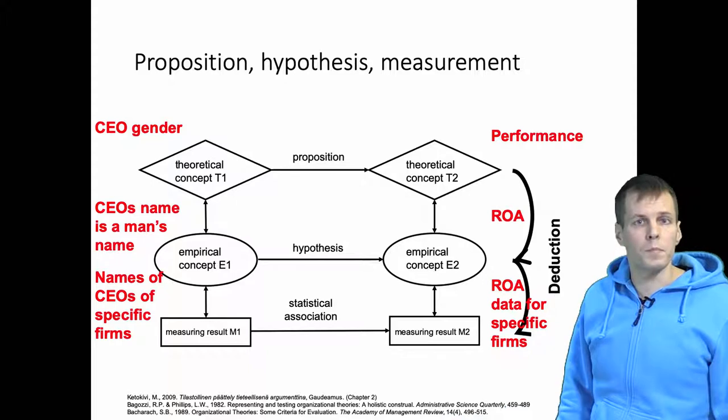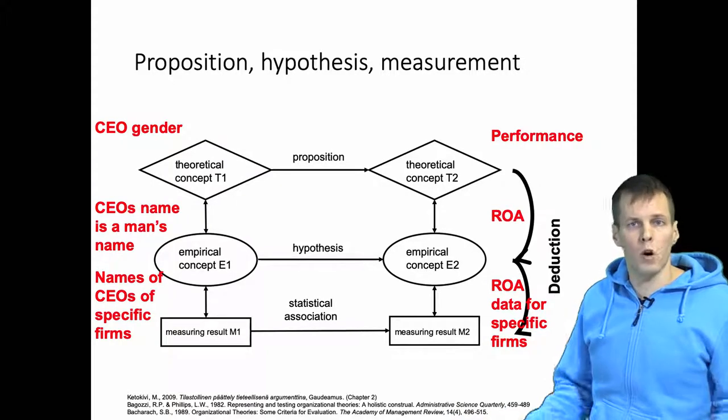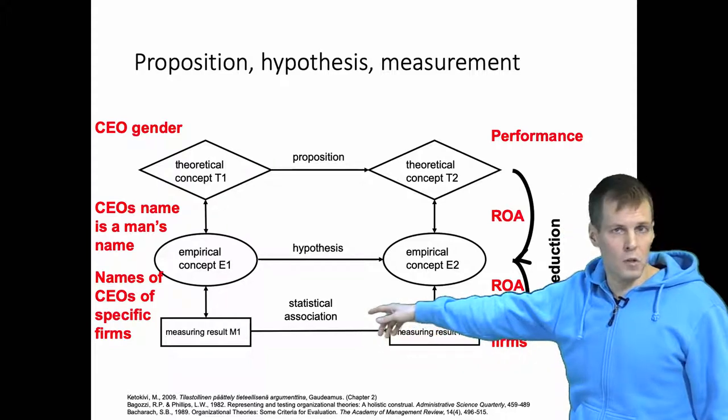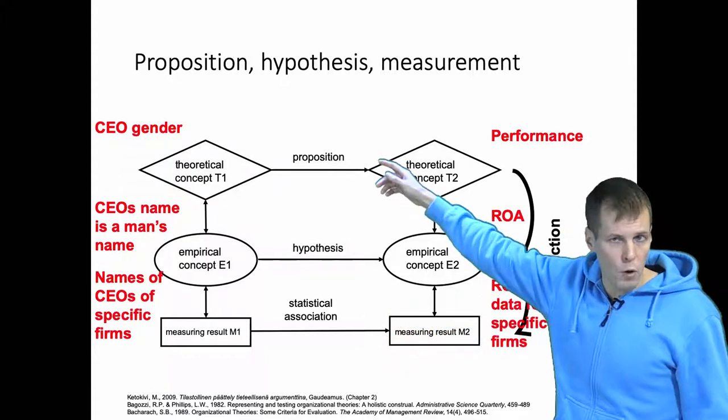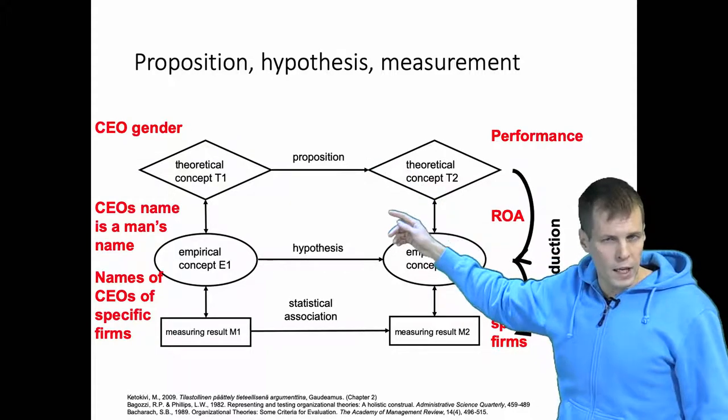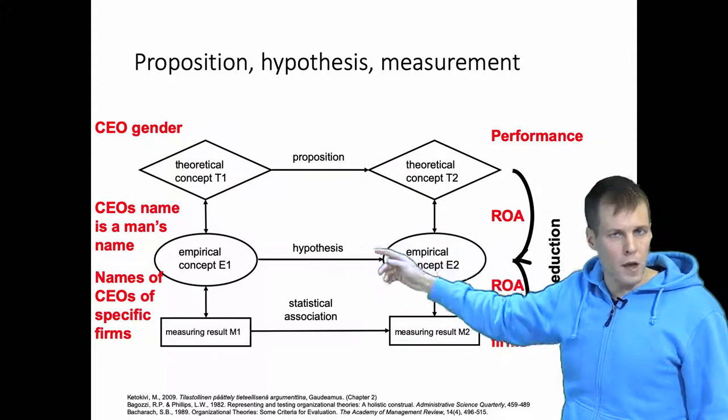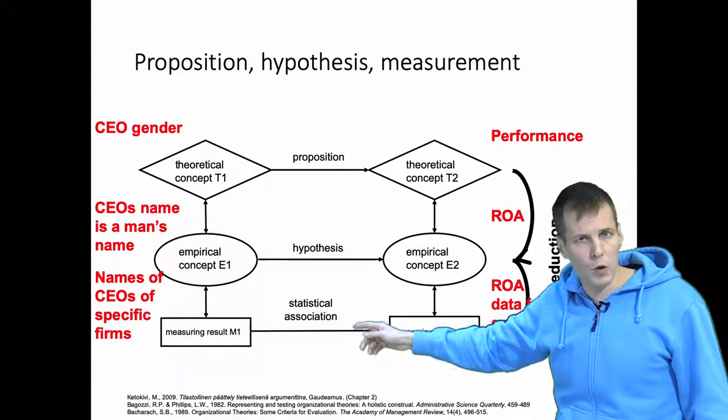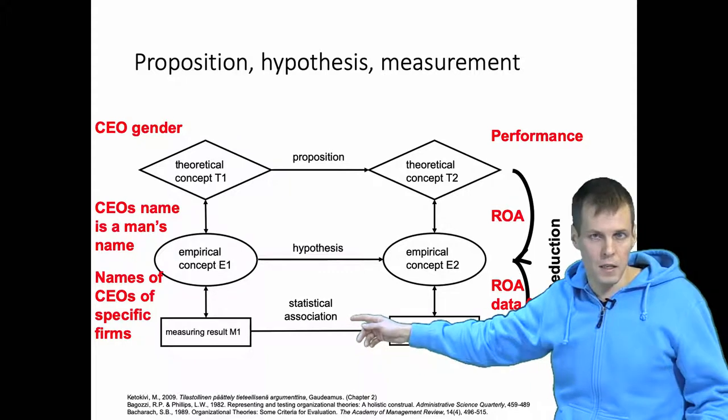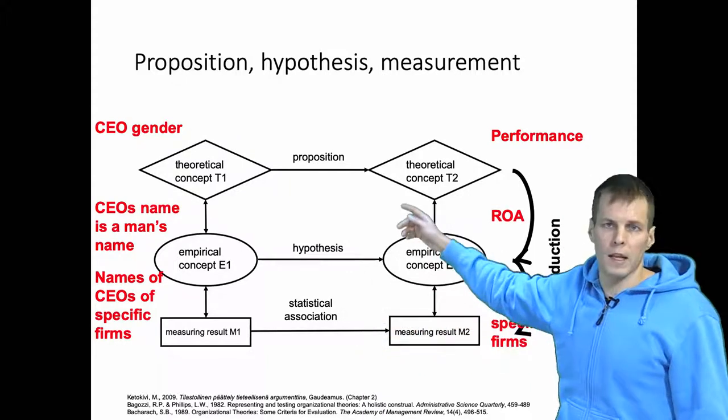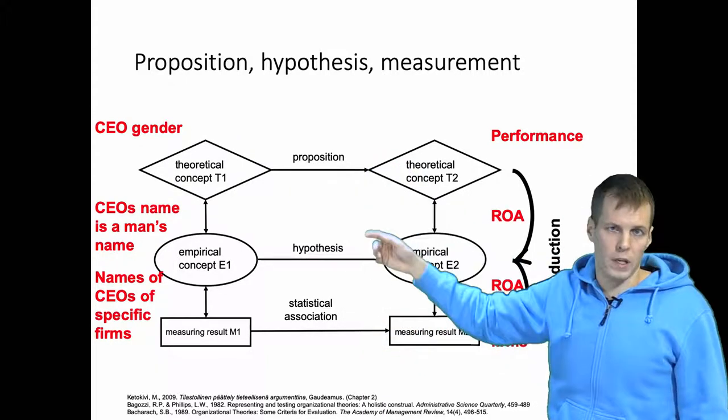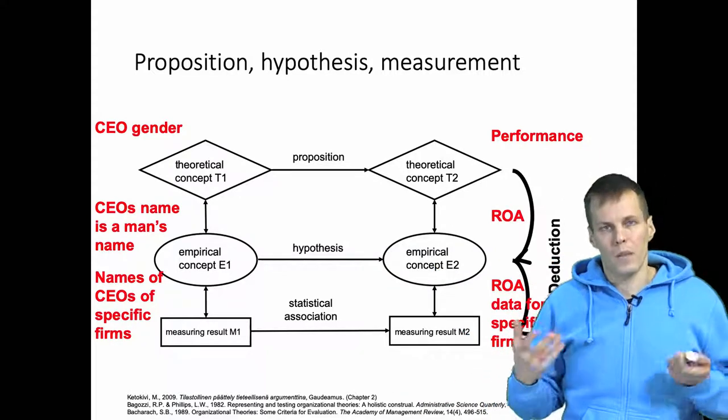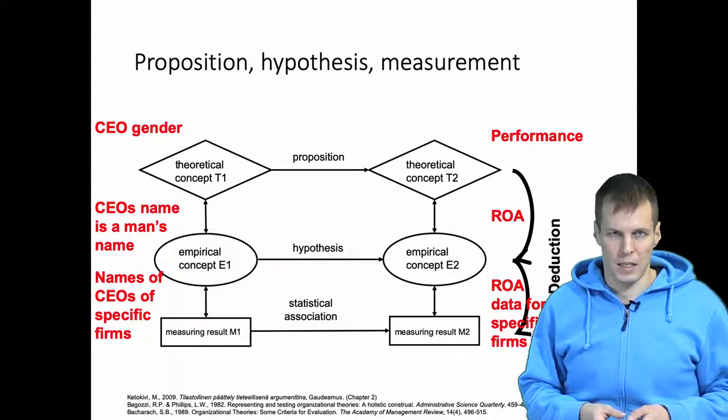Then we measure data and calculate some kind of statistical association. We infer that if this proposition is true, then this hypothesis must be true as well, and then we must observe statistical association. If we don't observe a statistical association that we hypothesized, then we conclude that the proposition was not correct, or at least it's not supported using these data. There's lots more to that, but that's the basic idea.